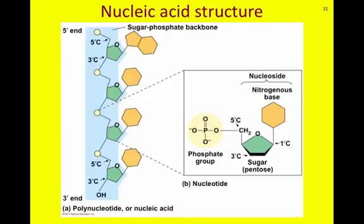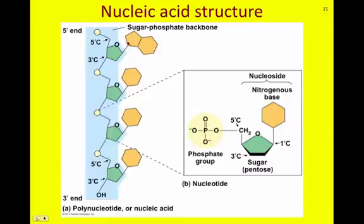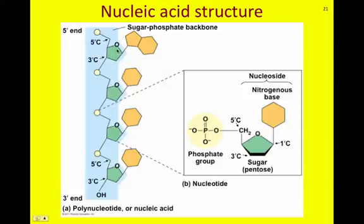The nucleic acid polymer is structured in monomers of nucleotides. Each nucleotide contains the nitrogenous base — shown here in orange — which is either a purine or a pyrimidine. Looking at this structure, it has two different rings, so it is a purine. The nucleotide also has the five-carbon sugar and a phosphate group.